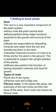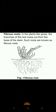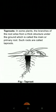Roots are of two types: fibrous root and tap root. In plants like grass, the branches of the root come out from the base of the stem — such roots are known as fibrous roots. The given figure shows the structure of a fibrous root.